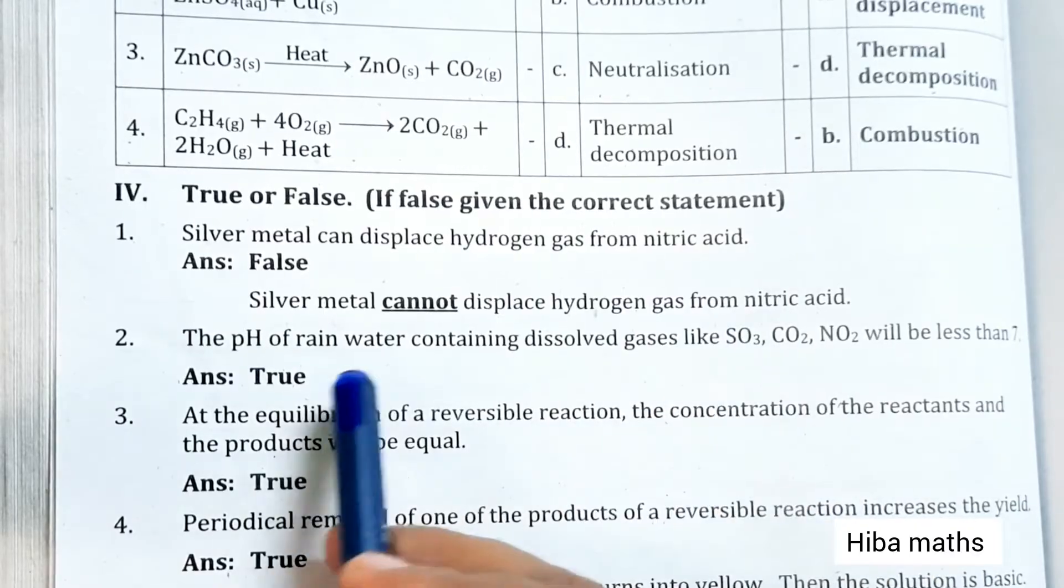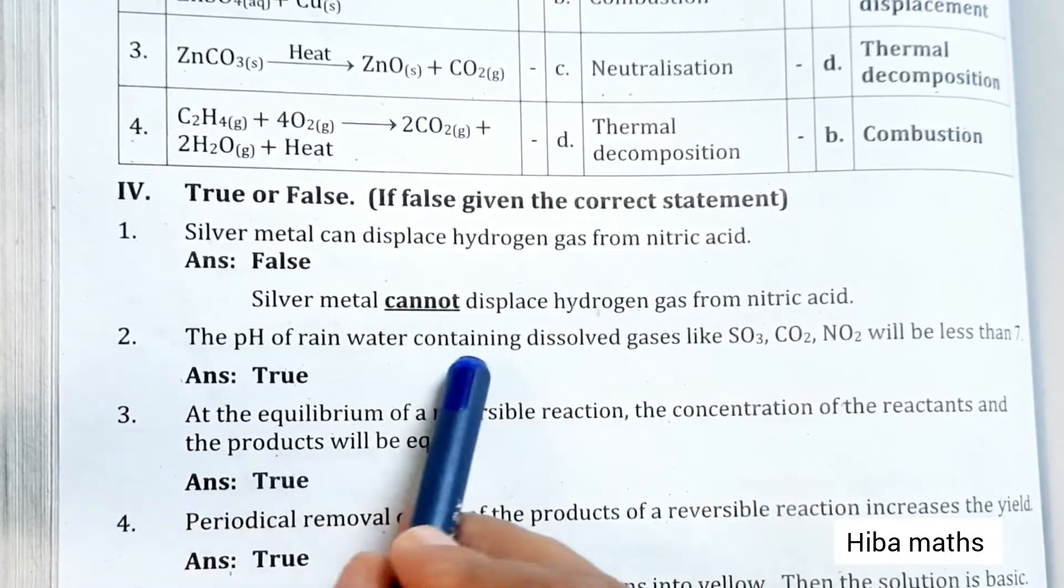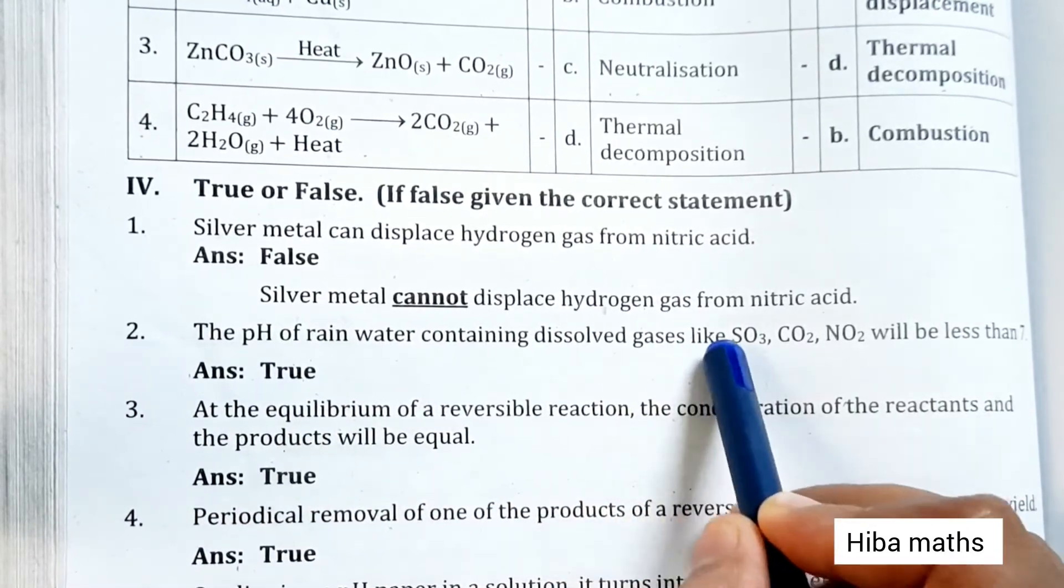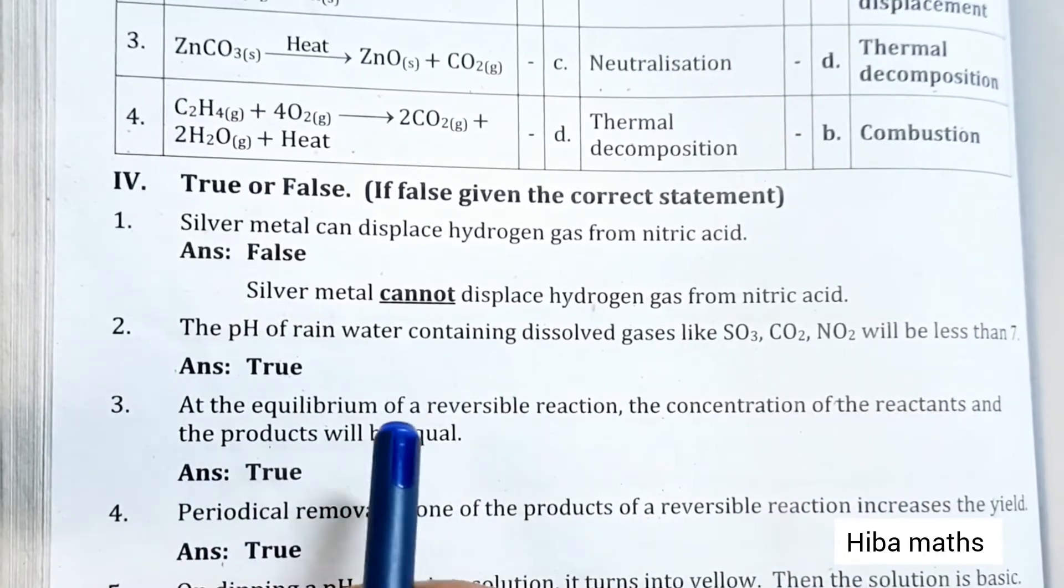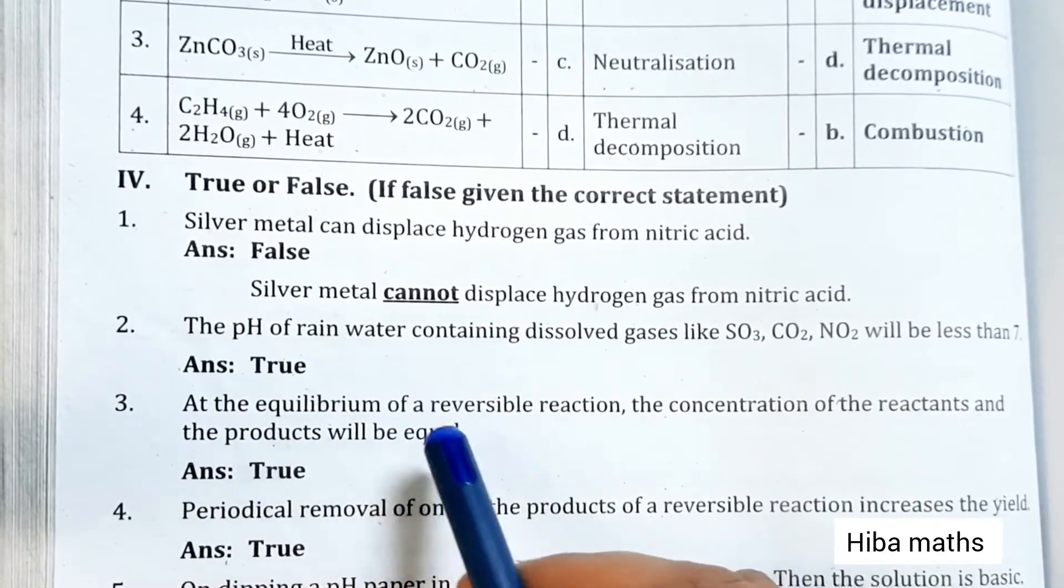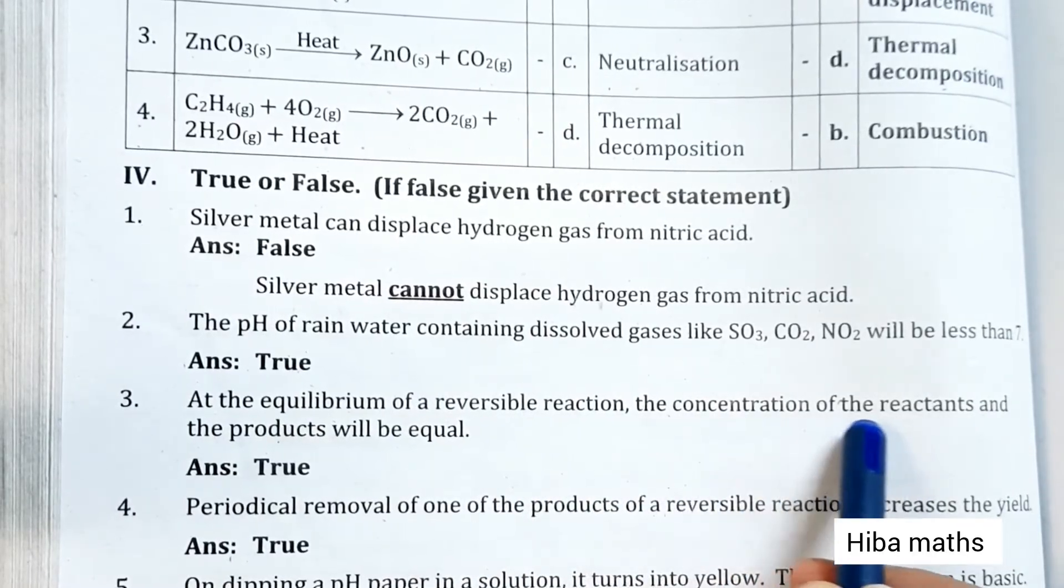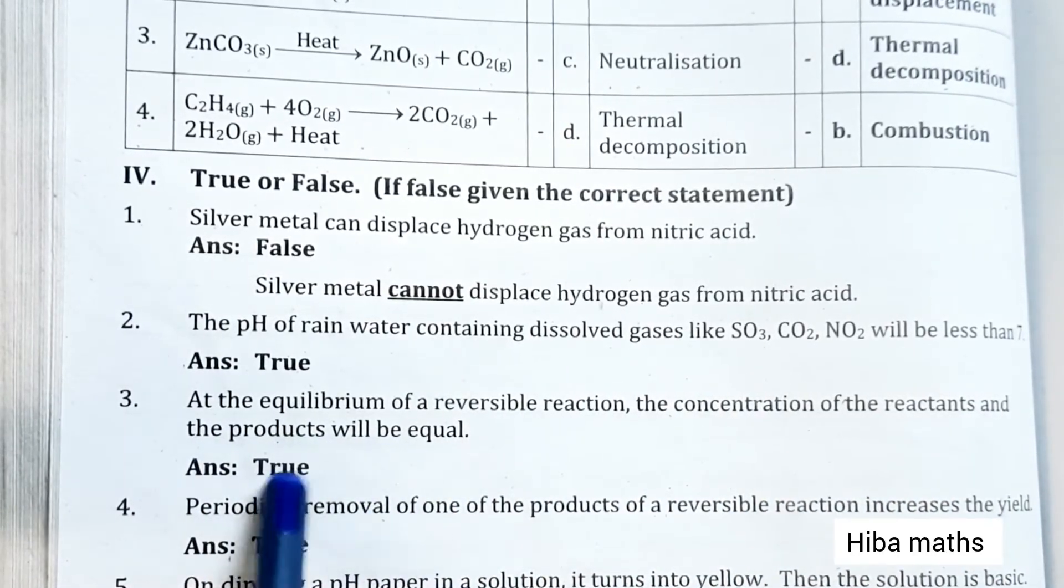The pH of rain water containing dissolved gases like SO3, CO2, NO2 will be less than 7 - True. At equilibrium of reversible reaction, the concentration of reactant and the product will be equal - True.